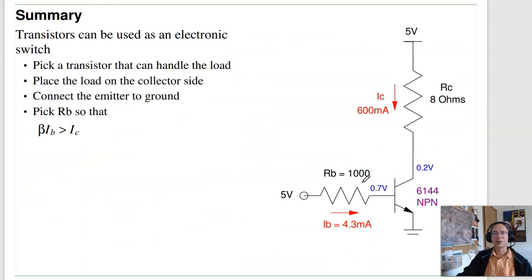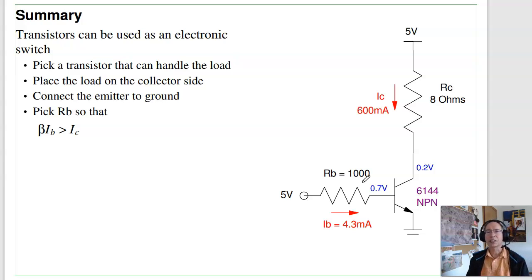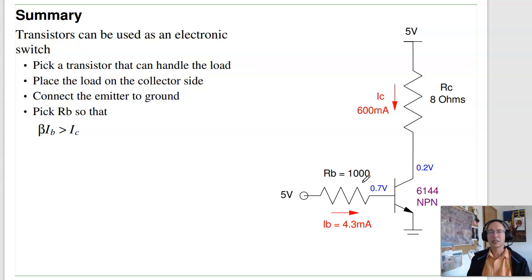In summary, transistors can be used as an electronic switch. To do that, pick a transistor that can handle the load, place the load on the collector side, connect the emitter to ground, and then pick RB so that beta times IB is bigger than IC. That's using a transistor as a switch.